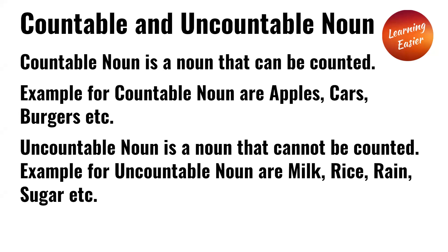Countable and uncountable nouns. A countable noun is a noun that can be counted. Examples of countable nouns are apples, cars, burgers, etc. An uncountable noun is a noun that cannot be counted. Examples of uncountable nouns are milk, rice, rain, sugar, etc.